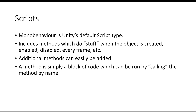MonoBehaviour is Unity's default script type. Whilst you can spend hours trying to figure out what MonoBehaviour means — and the Unity website does explain it if you want to look it up — for the purposes of this entry-level tutorial, just know that it's Unity's default type of script. It automatically turns any script you create inside Unity into a MonoBehaviour by default. It includes methods which do stuff when different things happen in your game — for example, when you start the game, when you enable or disable a game object, or every single frame — giving you control over how your game works from the outset.